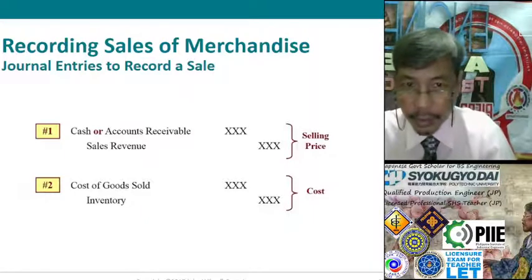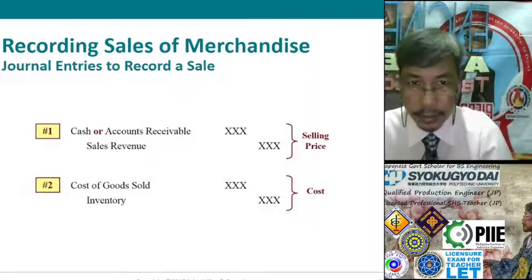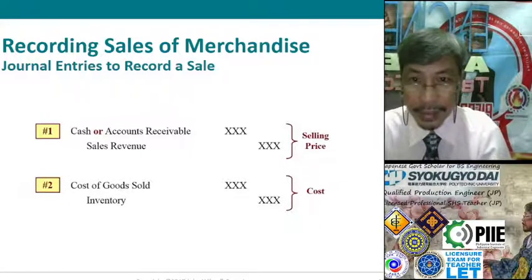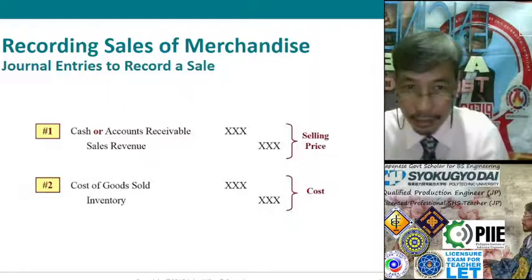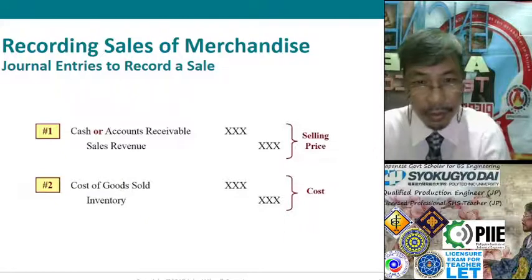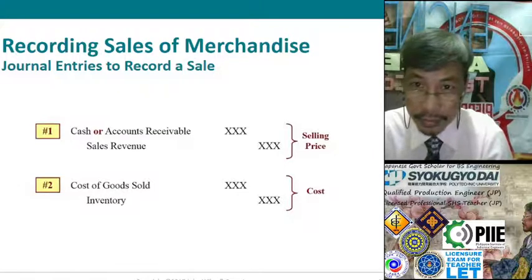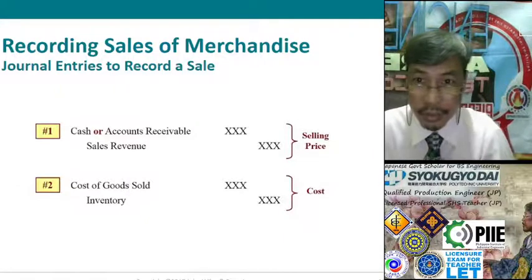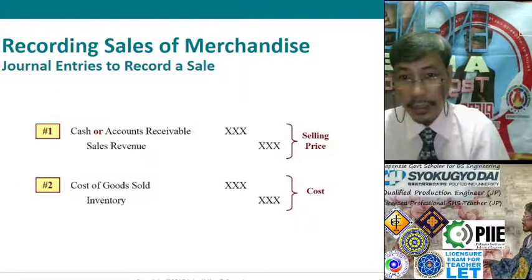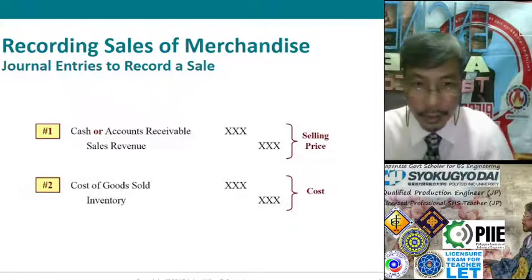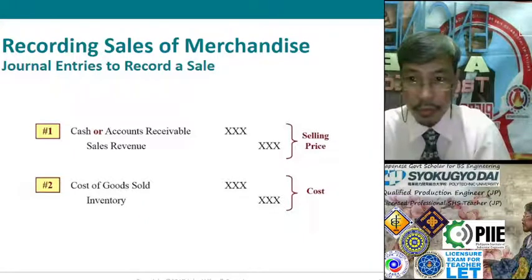Recording sales of merchandise — how to do it in journals. We are now recording the sales. The format: either Cash or Accounts Receivable is debited, because those are assets and increasing. While Sales Revenue is a revenue account, which is part of Stockholders' Equity and increasing — therefore it is to be credited. The amount is the selling price. The next entry is the cost of goods sold.